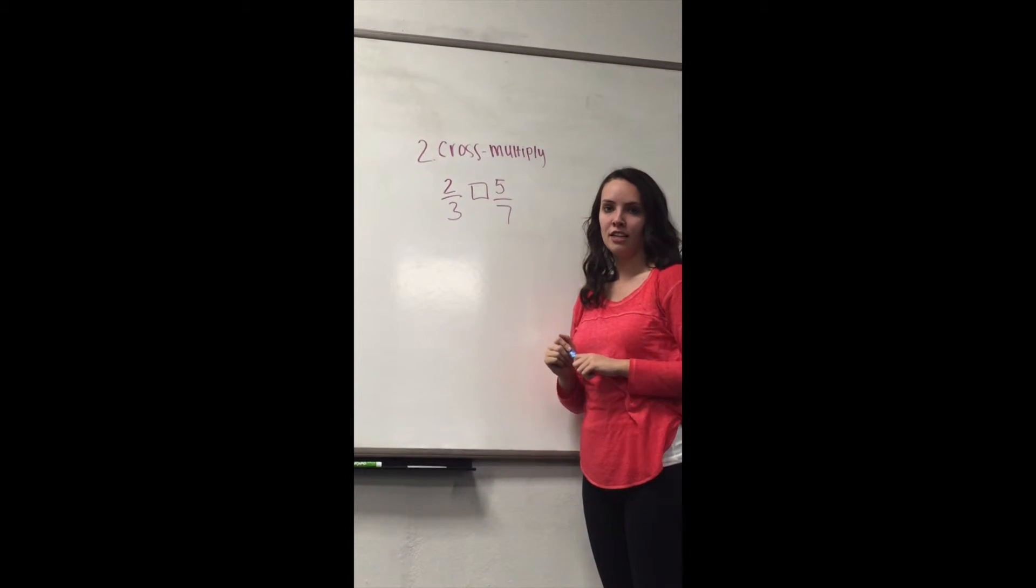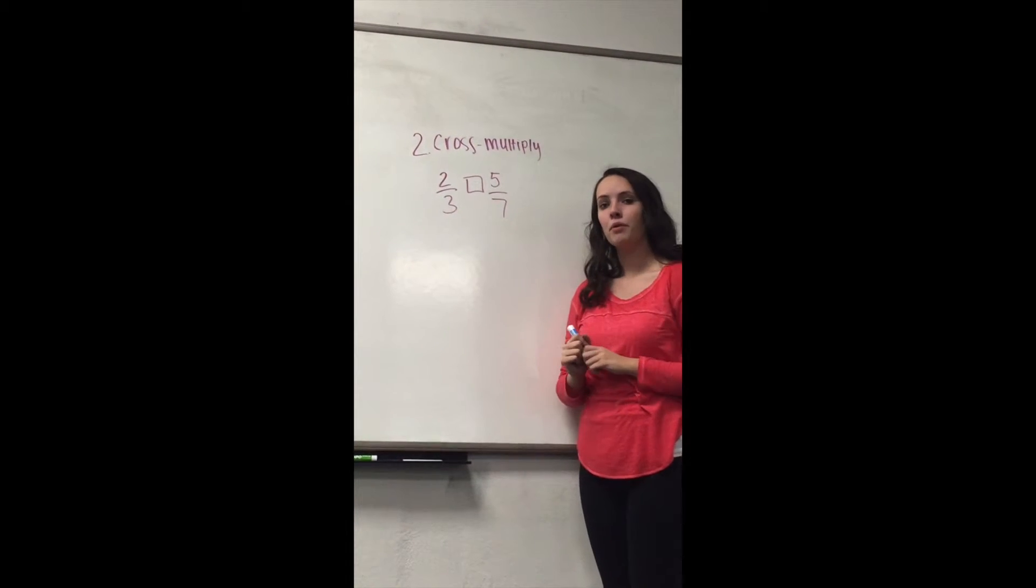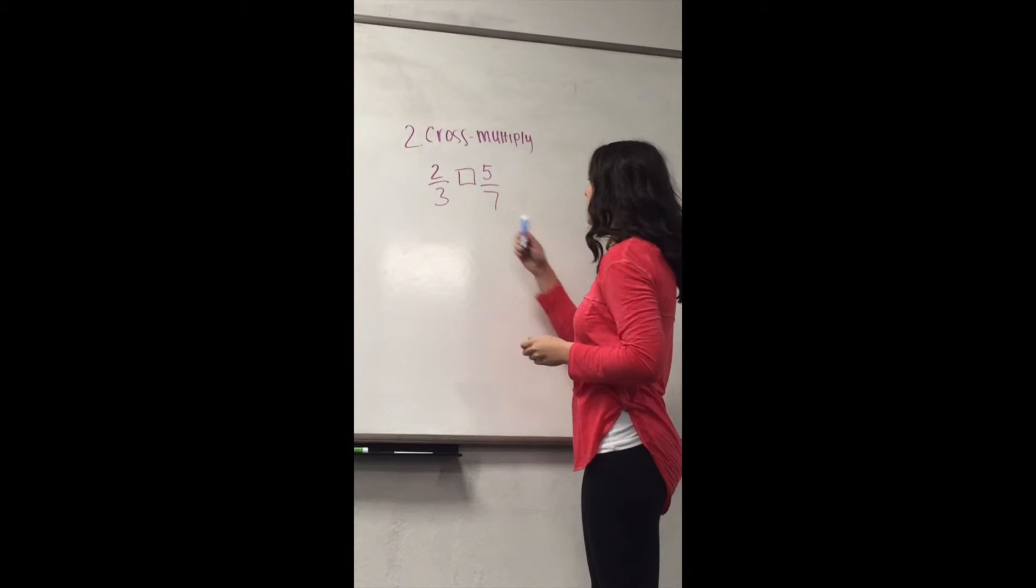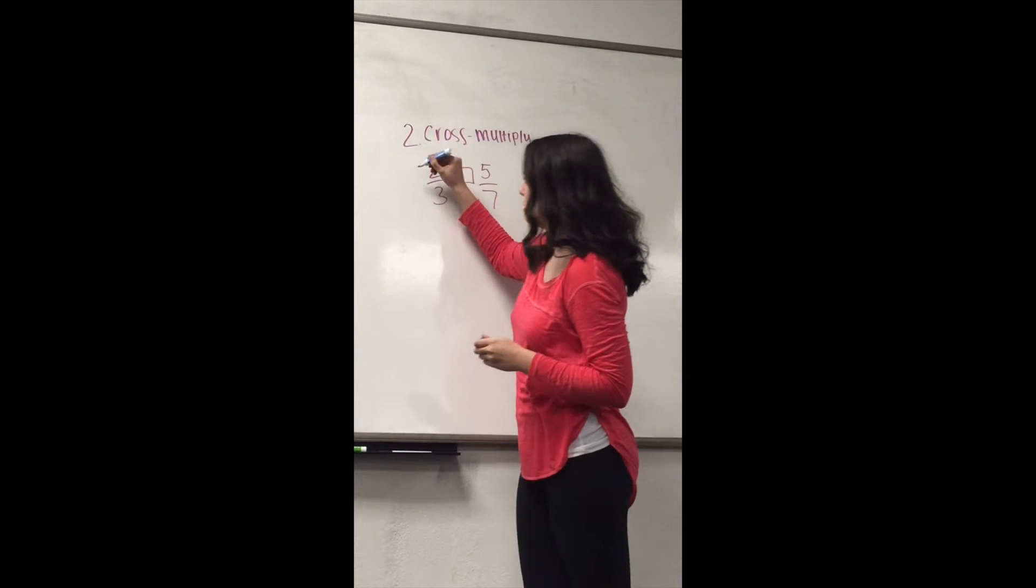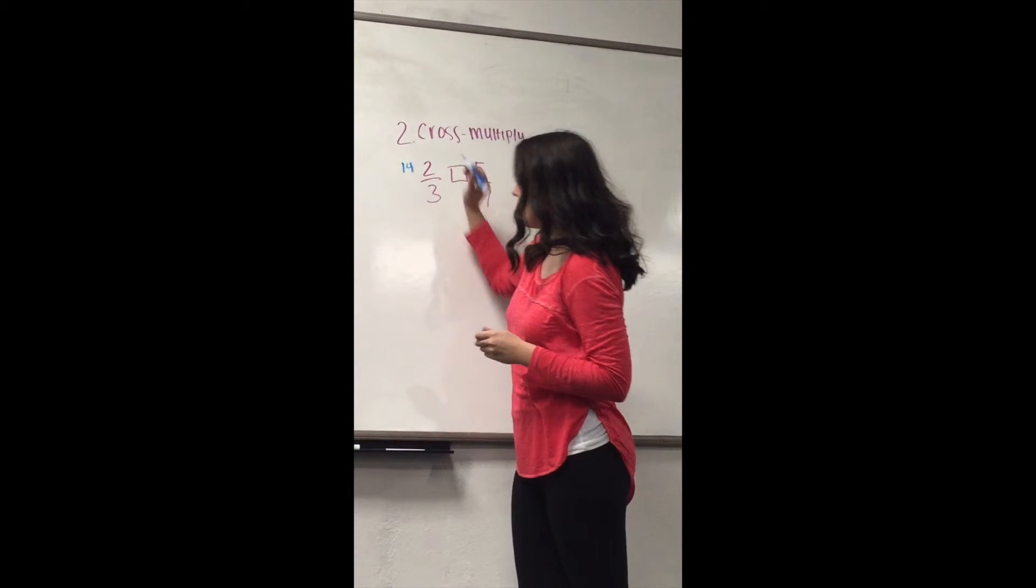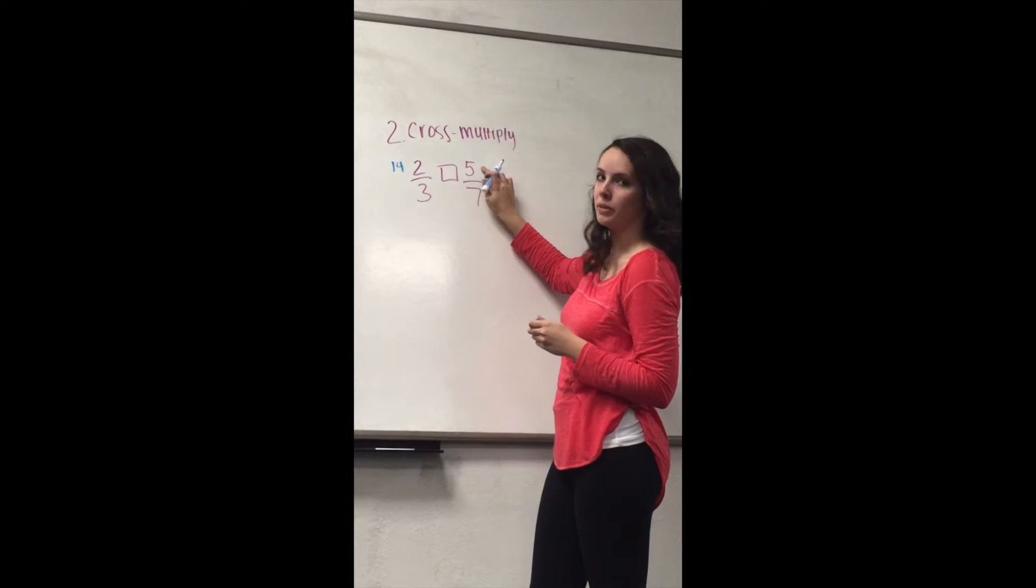The second method that we're going to learn how to use is called cross multiply. And what we're going to do is multiply 7 times 2, which equals 14, and 3 times 5, which equals 15.